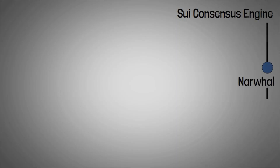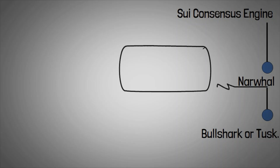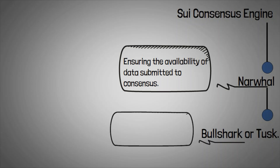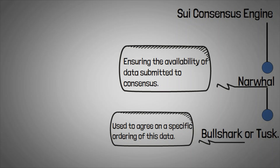Another aspect worth highlighting is the Sway consensus engine, which comprises Narwhal and either Bullshark or Tusk. Narwhal is responsible for ensuring the availability of data submitted to consensus, while Bullshark or Tusk is used to agree on a specific ordering of this data.